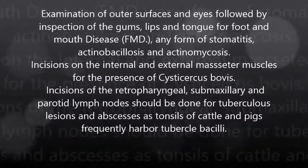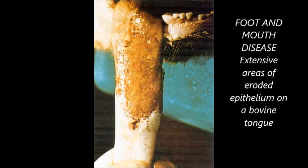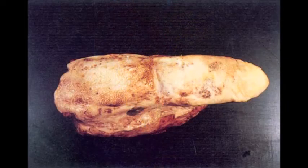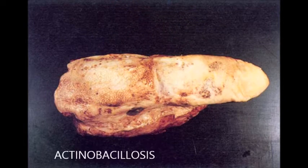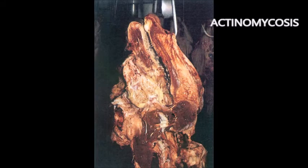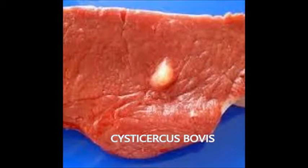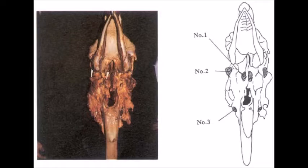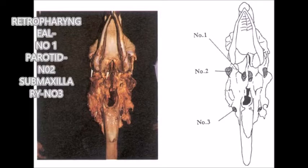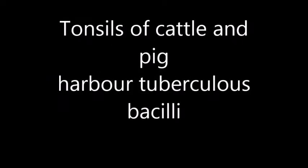Examination of the head begins with the outer surface and eyes, followed by inspection of the gums, lips, and tongue for foot and mouth disease, any form of stomatitis, actinobacillosis, and actinomycosis. Incisions are usually made on the internal and external masseter muscles for the presence of Cysticercus bovis. Incisions of the retropharyngeal, submaxillary, and parotid lymph nodes should be done for tuberculosis lesions and abscesses, as tonsils of cattle and pigs frequently harbor tuberculosis bacilli.